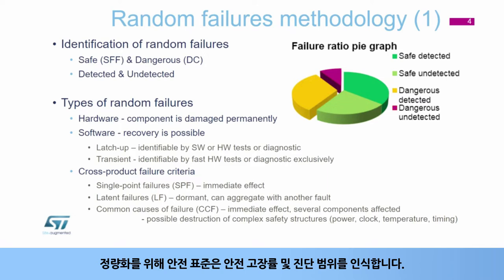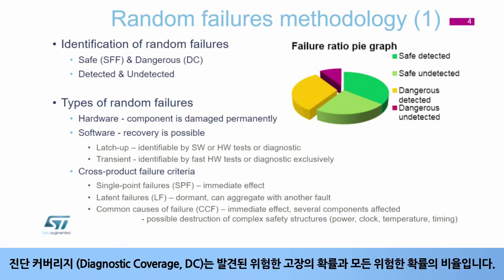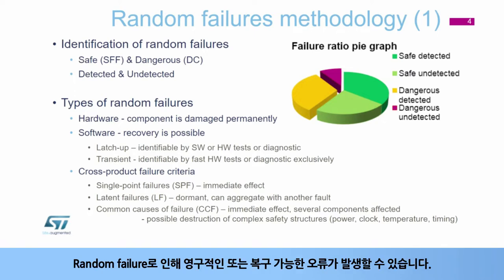For quantification purposes, safety standards recognize a safe failure fraction and diagnostic coverage. The safe failure fraction, or SFF, is the ratio of the rate of safe failures — including the rate of detected dangerous failures — to the total failure rate of safe failures as well as detected and undetected dangerous failures. The diagnostic coverage, or DC, is the ratio of the probability of detected dangerous failures to the probability of all the dangerous failures.